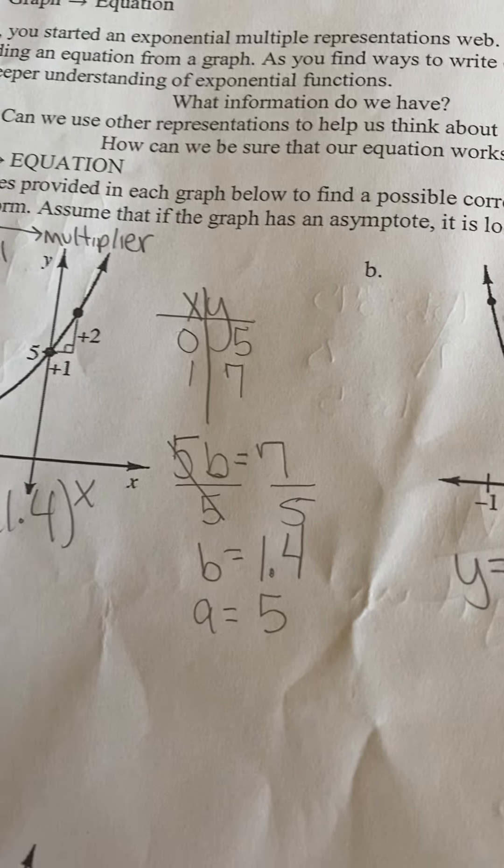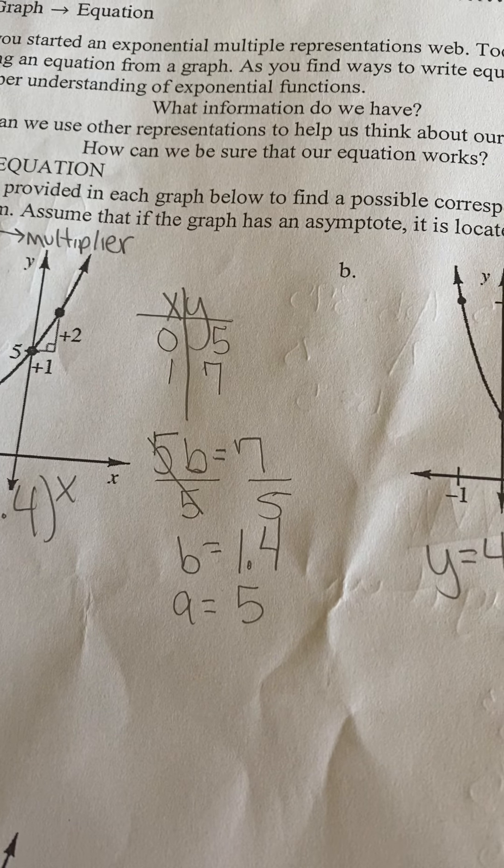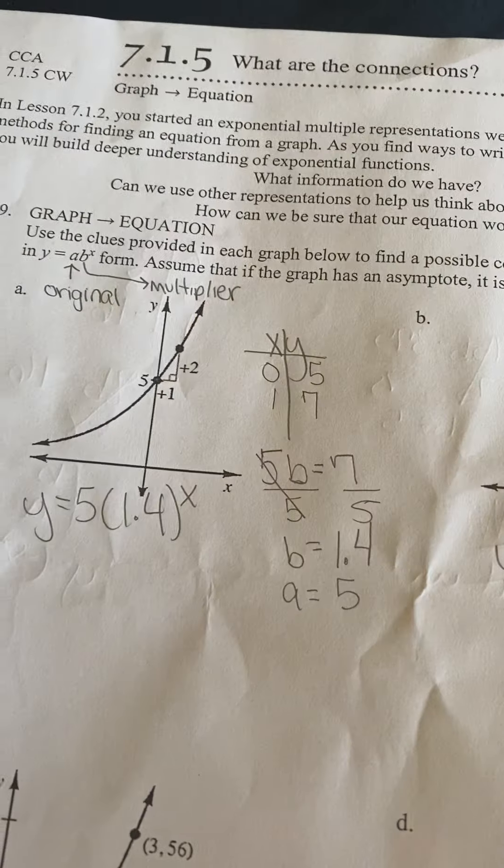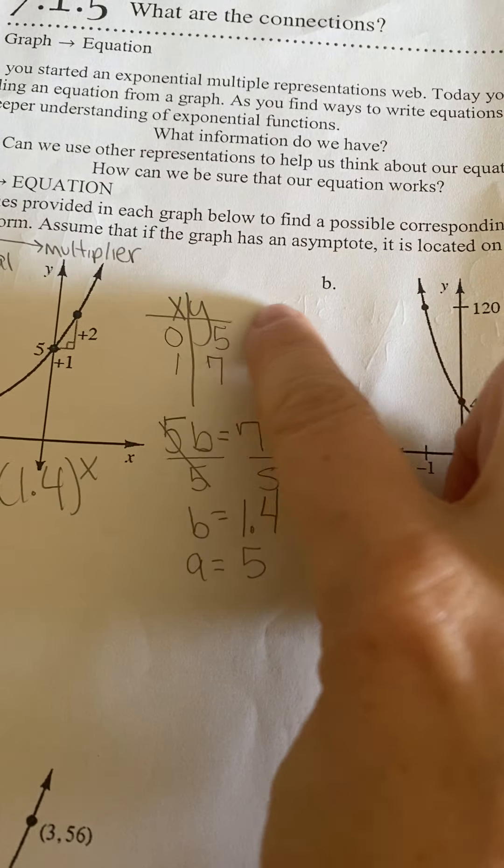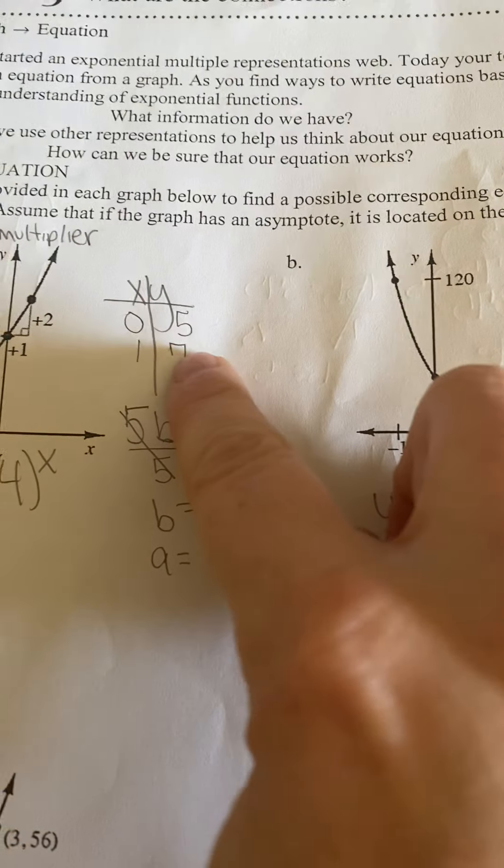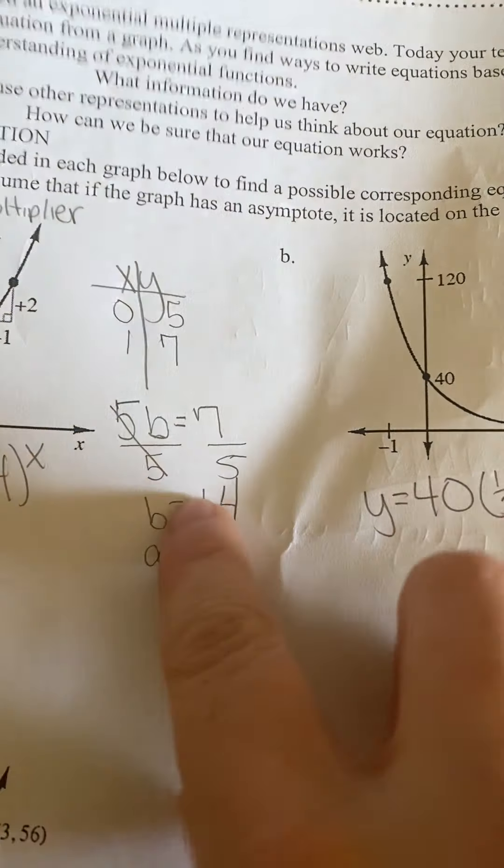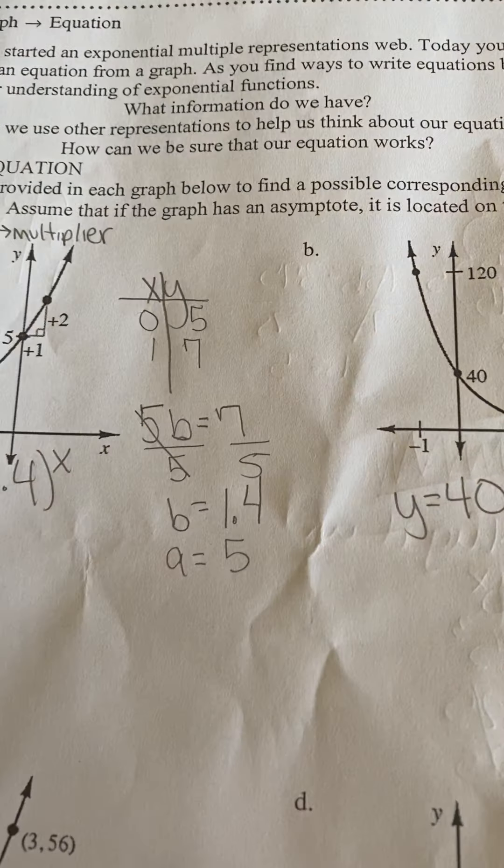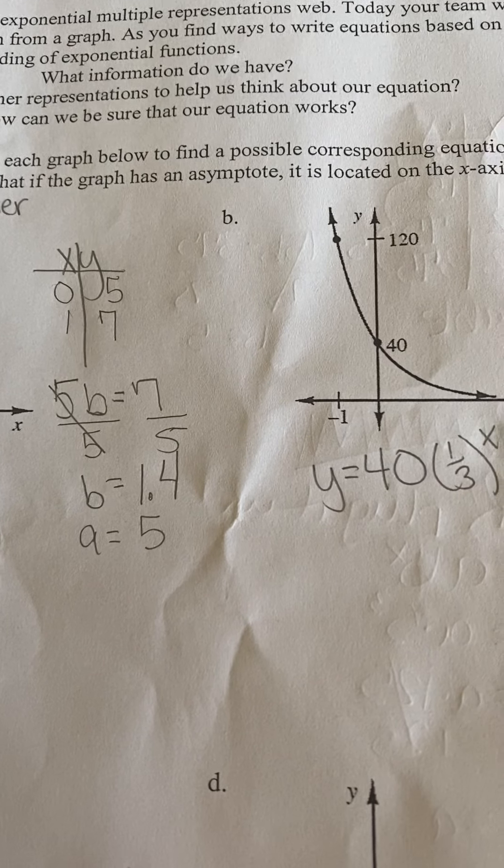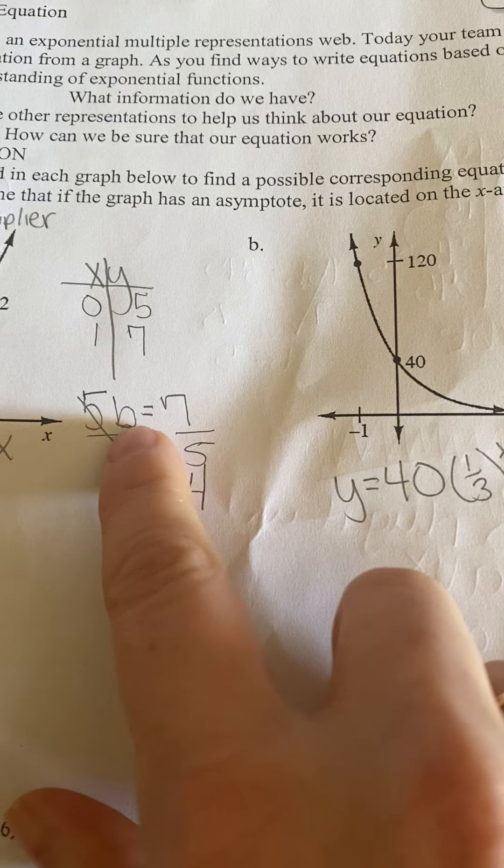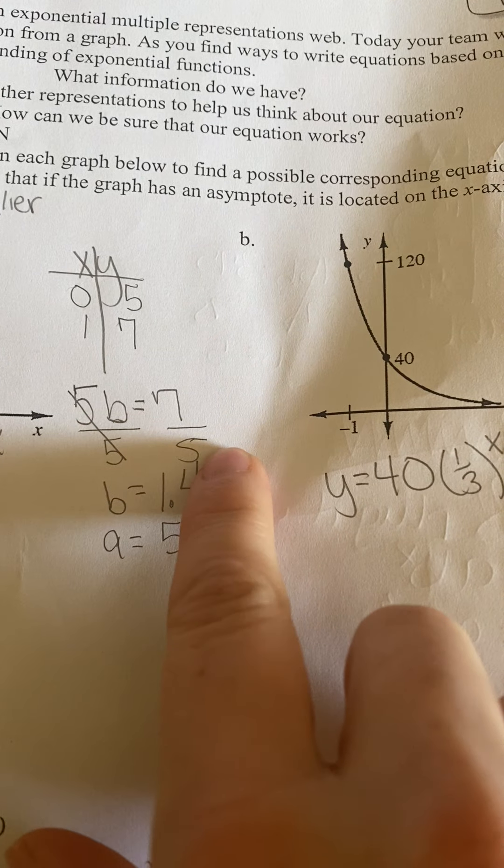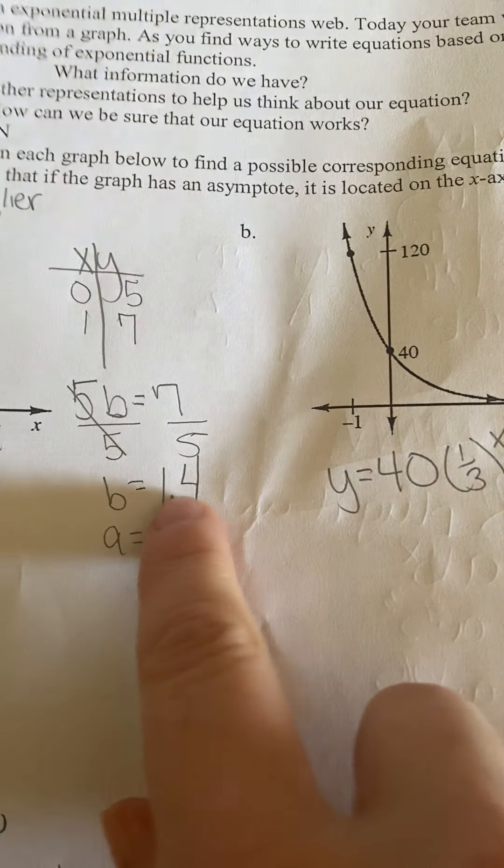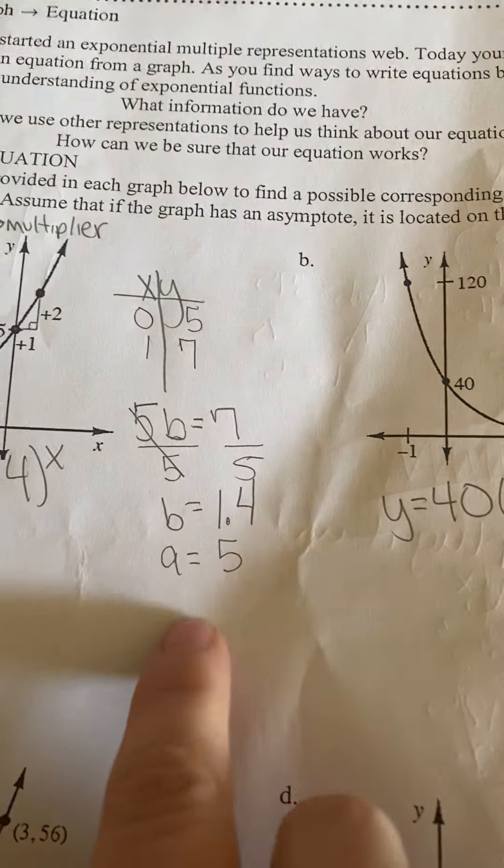From there, now remember, these are exponential graphs and not linear, so you're not subtracting or adding to find what happens like you would for slope. You want to find what you had to multiply by. So 5 times the multiplier equals 7. 5 times b, the opposite of times is divide, so divide by 5. 7 divided by 5 is 1.4. So your multiplier is 1.4.